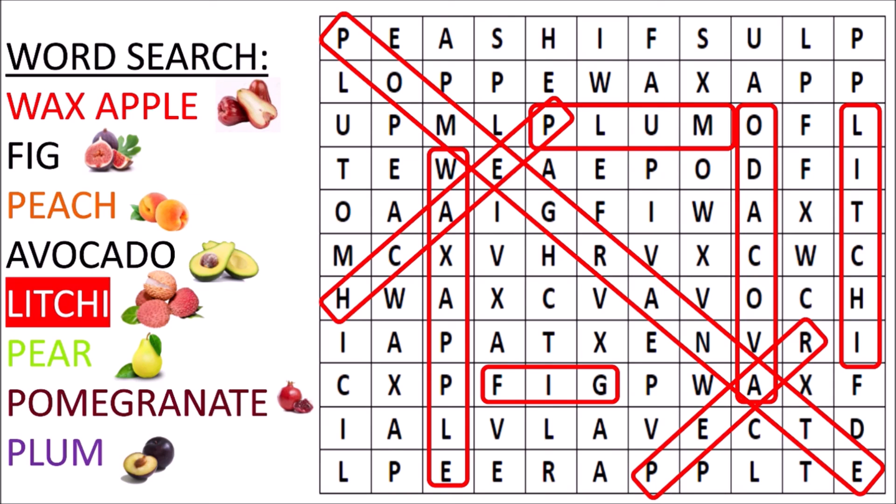Let's repeat. Wax apple. Fig. Peach. Avocado. Lychee. Pear. Pomegranate. Plum. Pomegranate. Pomegranate.